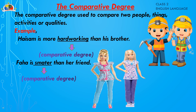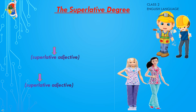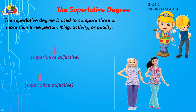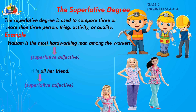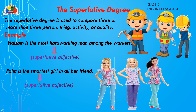The superlative degree is used to compare three or more nouns or pronouns — any person, place, thing, activity, or quality. For example, 'Hasam is the most hard-working man among the workers' — we compare his work with all workers, and since it's more than two people, it's a superlative degree. 'Paha is the smartest girl among all her friends' — comparing with more than two people, so it's the superlative degree.